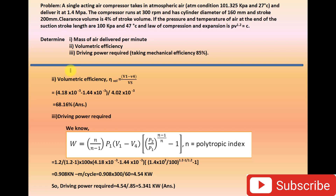Now for the second part: volumetric efficiency. Volumetric efficiency equals Vf divided by Vs, where Vf is the actual volume of free air delivered per cycle. With V1 = 4.18 × 10⁻³ m³, V4 = 1.44 × 10⁻³ m³, and Vs = 4.02 × 10⁻³ m³, we get volumetric efficiency = 68.16%.